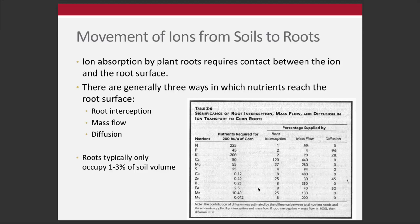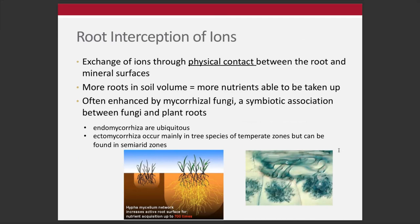Looking at the table from the Havlin textbook, we have root interception, mass flow, and diffusion. Depending on the nutrient, the mechanism for plant uptake is tremendously varied. Nitrogen, for example, is supplied 99% through mass flow, whereas for phosphorus, 94% is through diffusion. These are rough estimates, but they illustrate that these three different mechanisms are generally how soil ions move from the soil solution to the plant root where uptake occurs.